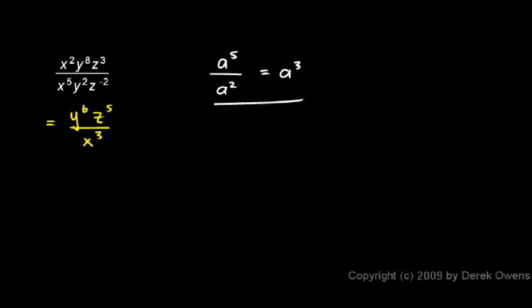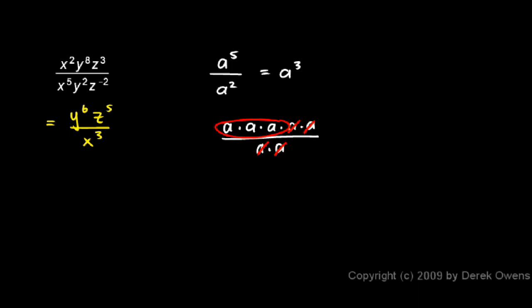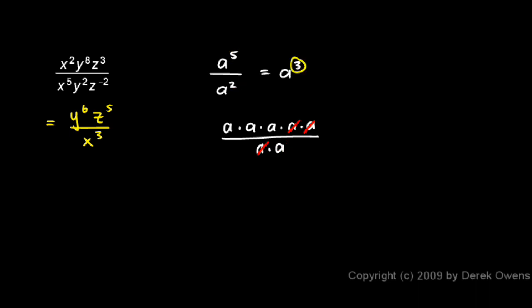You can see why this has to be true if you expand this. A to the fifth is a times a times a times a times a — five a's multiplied together — divided by a squared, which is a times a. You can see that two of the a's up top cancel out the two down below, leaving us with just a times a times a. Those two a's down here completely go away and two of those five are gone, leaving us with three. The quick way is just to do five minus two and you get three.